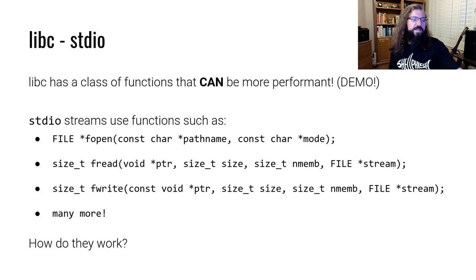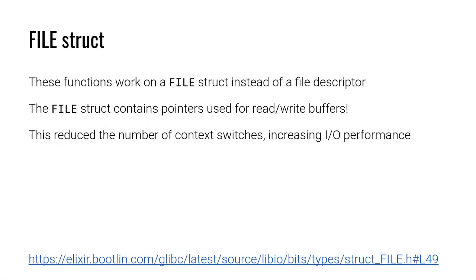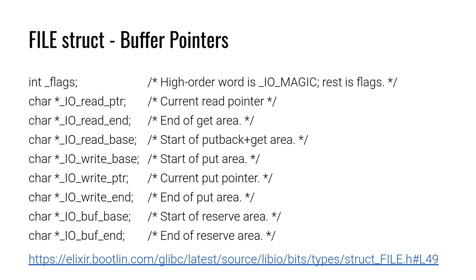So let's look at why exactly that is. These functions work on file structs instead of file descriptors, and the file struct contains a bunch of pointers used to buffer the reading and writing requested by user land. Because we reduce the number of raw reads and writes that actually occur, there's less context switching, which results in increased performance. The file struct contains a bunch of pointers used for buffering. If you're interested in the file struct as a whole, check out the link at the bottom of this slide, which contains the source with the IO file struct definition.